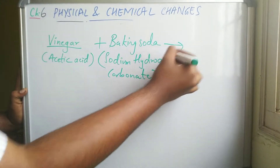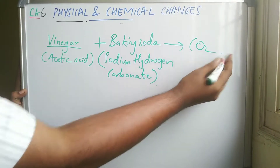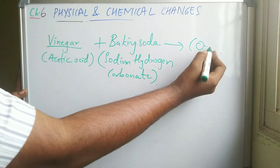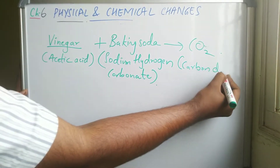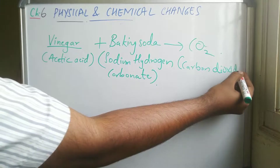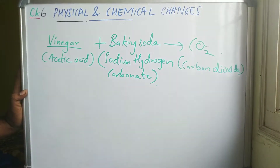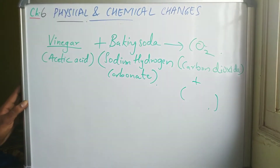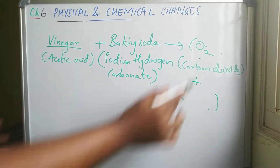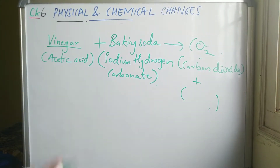Carbon dioxide is found as a product. So basically, vinegar is reacted with baking soda to produce carbon dioxide.